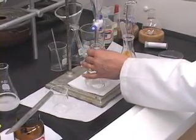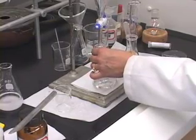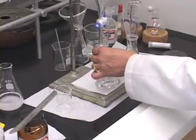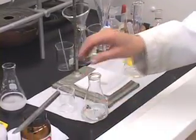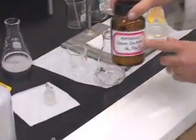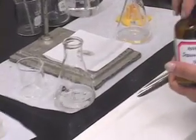Once everything is drained, take the Erlenmeyer flask out and add anhydrous sodium sulfate as we did before. Remember, just keep adding, swirling the flask.